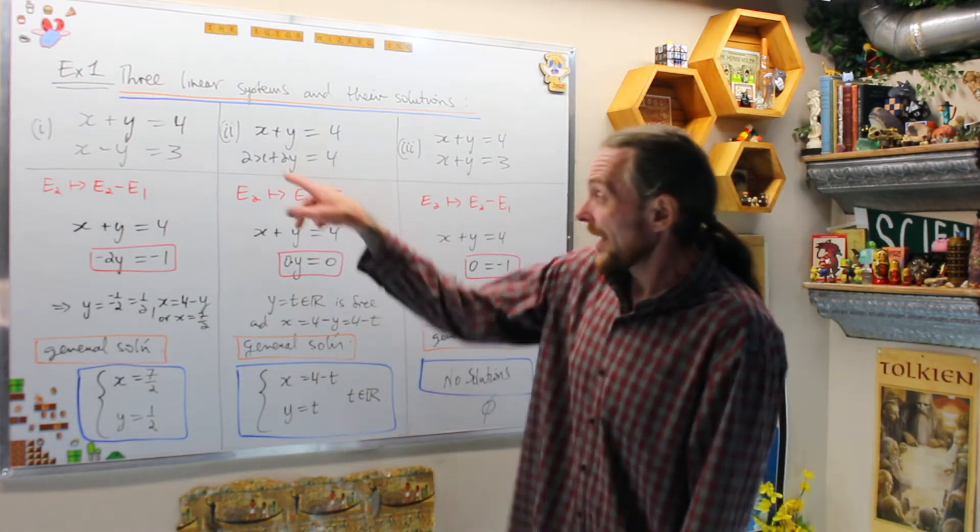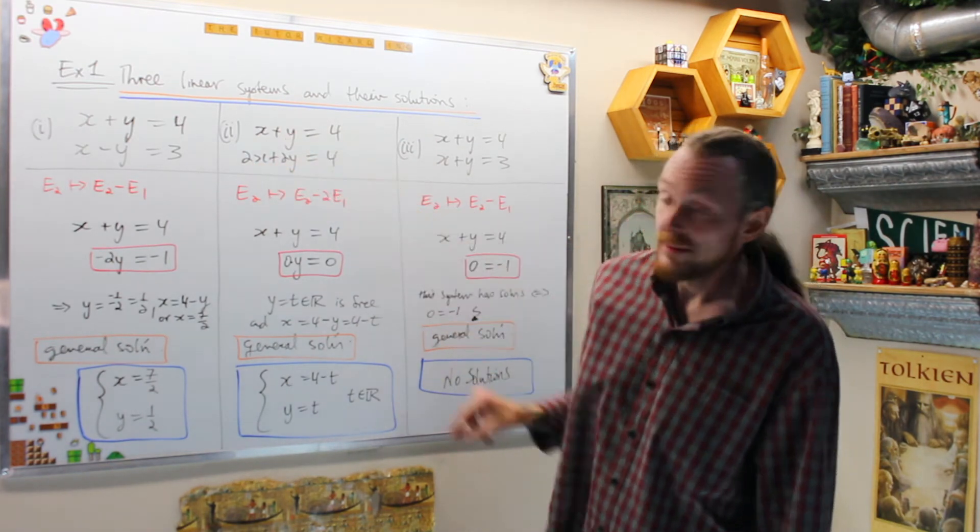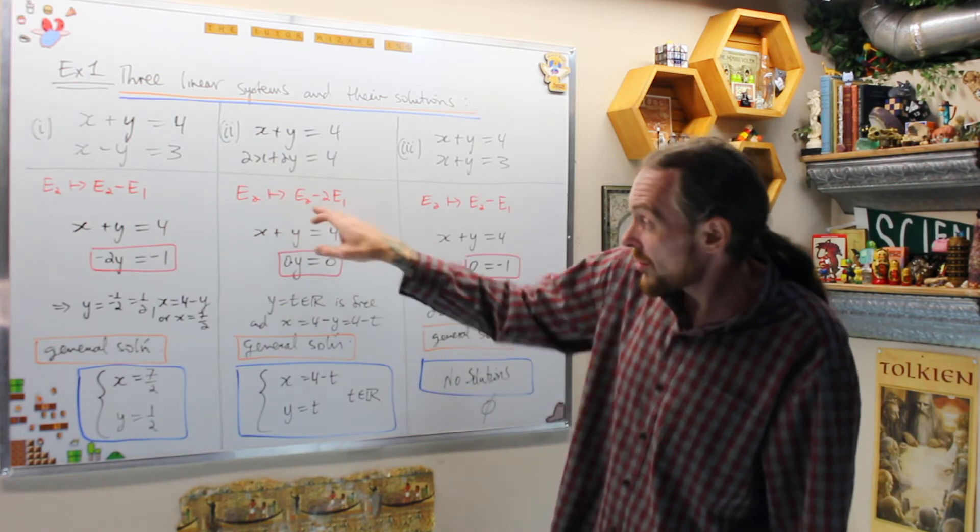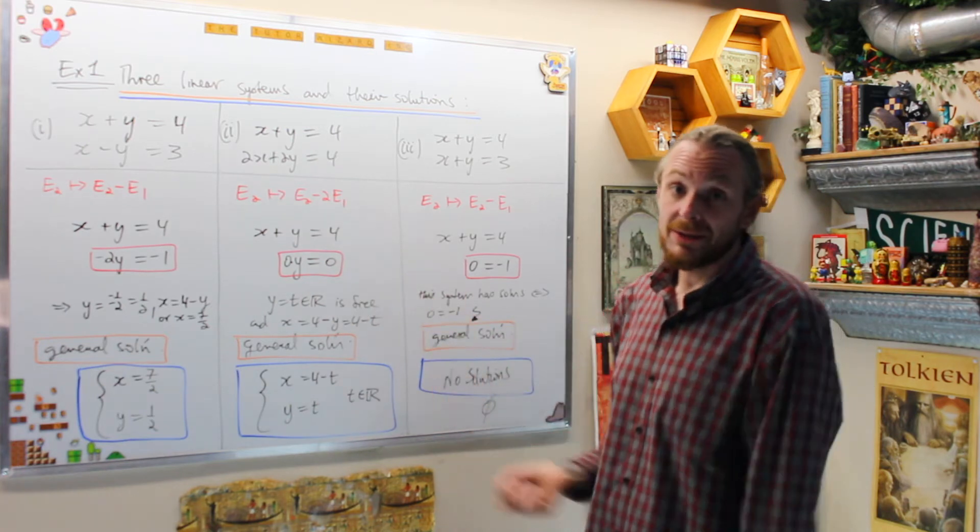In the second case, I see and start suspecting when we start wanting to solve this that this is a multiple of this one. Therefore, if I replace equation two with equation two minus two times equation one, I get zero times y is zero, or a tautology.